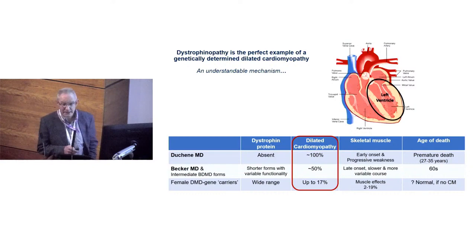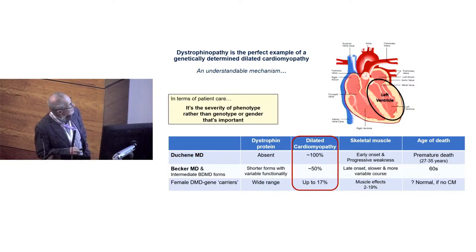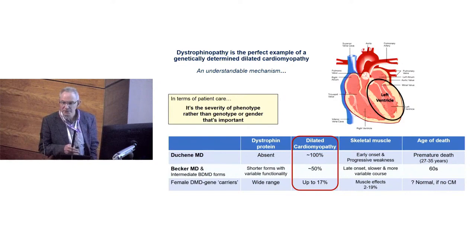The impact on survival is significant. Duchenne patients tend to die in their late 20s to early 30s, with the average age of death in Becker being about 60. It's probably old-fashioned to make a strong distinction between Duchenne and Becker, because it's the phenotype rather than the genotype that determines the condition's impact and care needs.